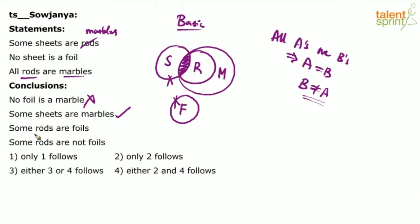Look at the third conclusion: Some rods are foils. In the basic diagram itself, it fails — no rod is a foil. This particular conclusion fails in the basic diagram itself, and if a conclusion fails in the basic diagram, it is always false. It cannot be taken as true.